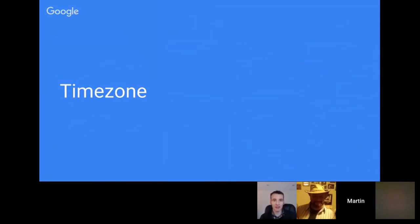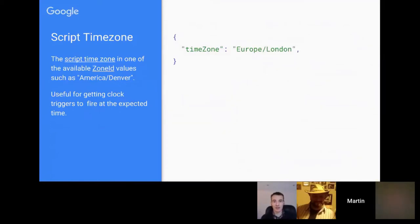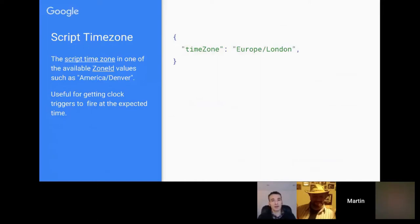One of the things you can do in the manifest file is set the script time zone. This can be useful if you're using a clock trigger and need to set it to the correct time. The time zone string uses a Zone ID — which is a Java convention — and there's a link to see which Zone IDs are available. You can also set this from the script editor menu.